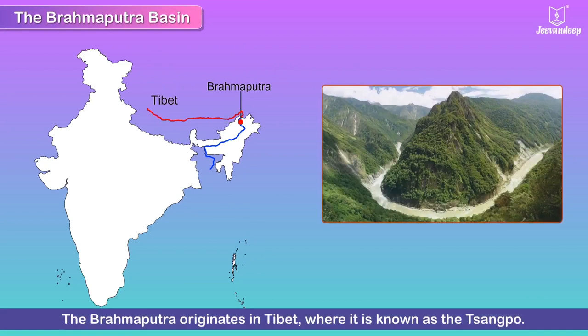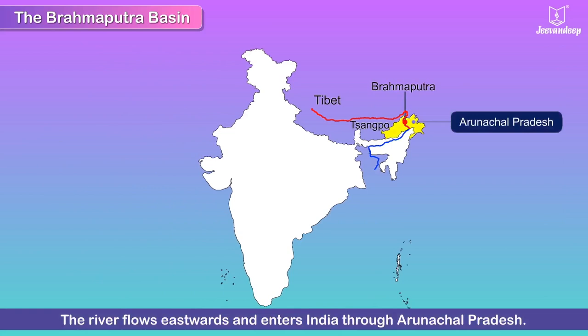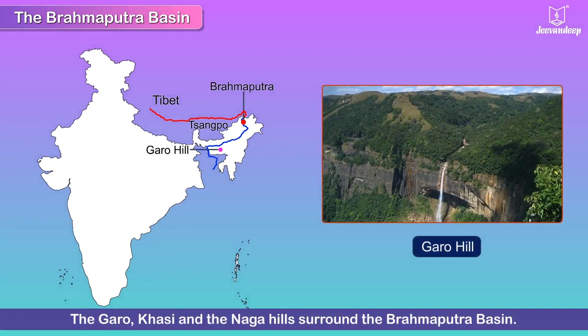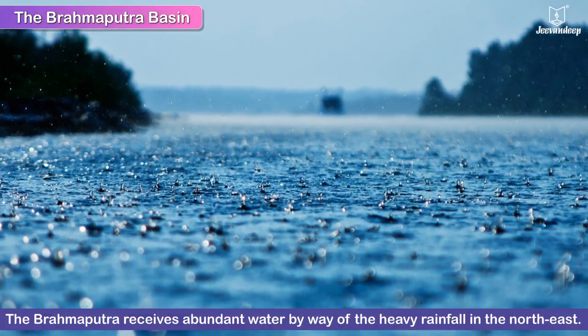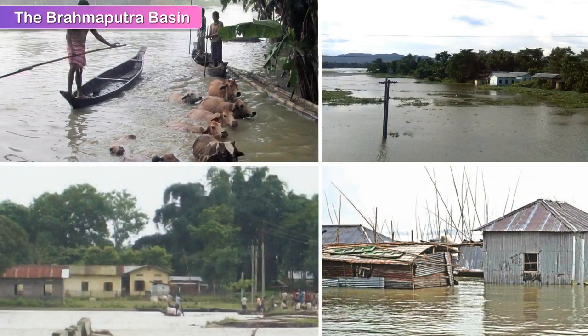The Brahmaputra originates in Tibet, where it is known as the Tsangpo. The river flows eastwards and enters India through Arunachal Pradesh. It then passes through Assam and moves into Bangladesh. The Gauru, Khasi, and the Naga Hills surround the Brahmaputra Basin. The Brahmaputra receives abundant water from heavy rainfall in the northeast and often overflows during the monsoon season, causing floods which damage and destroy life and property.